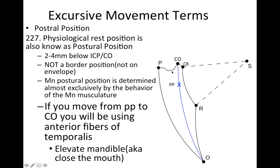If you move from the postural position to centric occlusion, you will be using the anterior fibers of the temporalis. So going from postural position to centric occlusion means we've just closed our mouth using the anterior fibers of the temporalis muscle. The anterior fibers of the temporalis muscle elevate the mandible, which is the same thing as closing the mouth.